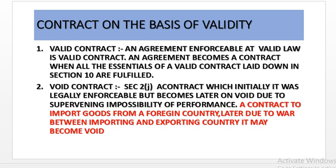Void contract. Section 2J of the Indian Contract Act defines the void contract. Void means which has no effect. The party under the void contract does not have the legal remedy. A contract which was initially legally enforceable and valid, but later on becomes void due to supervening impossibility of performance. For example, a contract to import goods from a foreign country was valid, but later due to war between both countries, it may become void.